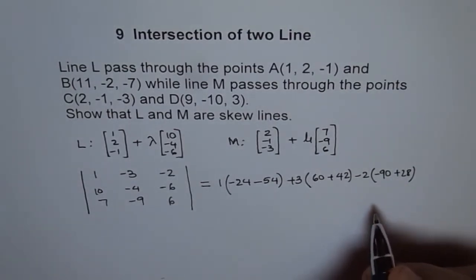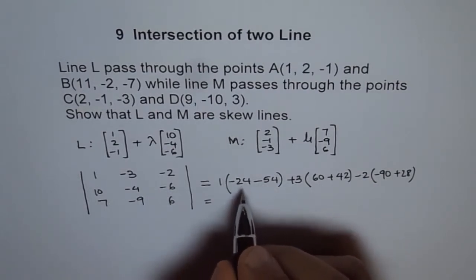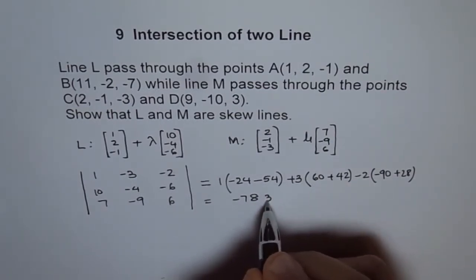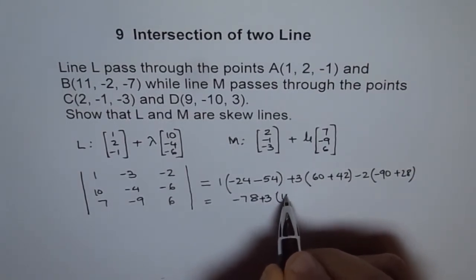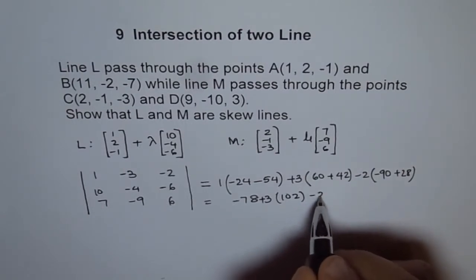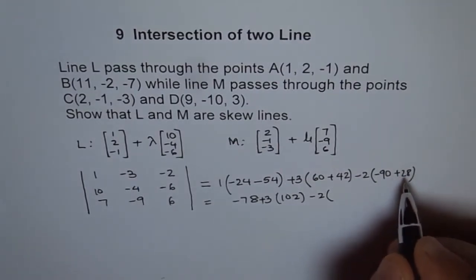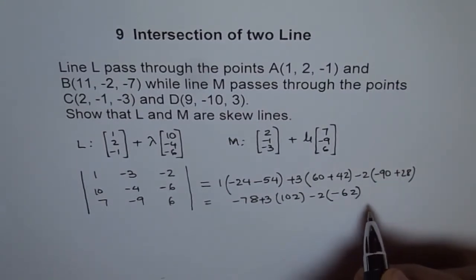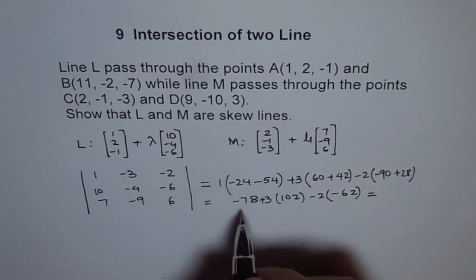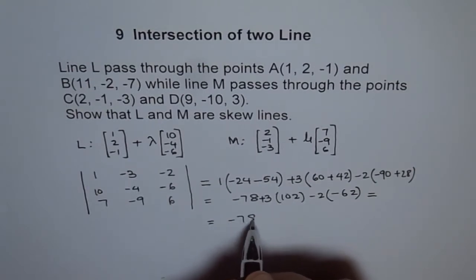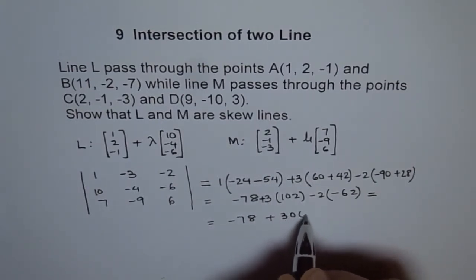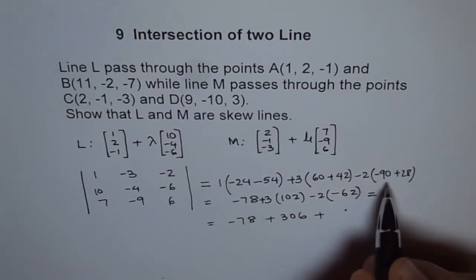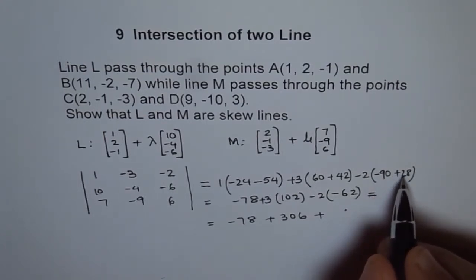Calculating: 1 times (minus 24 minus 54) gives minus 78. Then plus 3 times (60 minus 42) gives plus 3 times 18, which is 54 — wait, let me redo: minus 3 times the value gives plus 102 after sign correction. And minus 2 times (minus 90 plus 28) gives minus 2 times minus 62, which is plus 124.